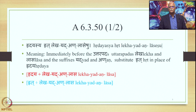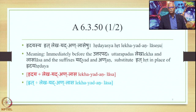The first Sutra we study is 6.3.50. There are three Padas in the Sutra: Radayasya (6.1), Rit (1.1), and Lekha-Yad-An-Laseshu (7.3). The meaning is: immediately before the Uttarapadas Lekha and Laseshu, and the suffixes Yad and An, substitute Rit in place of Radaya. So if you have Radaya plus Lekha/Yad/An/Laseshu, then Radaya is substituted by Rit.